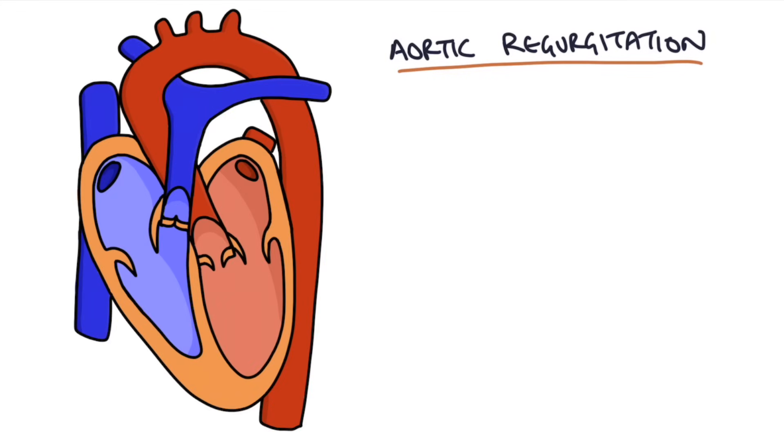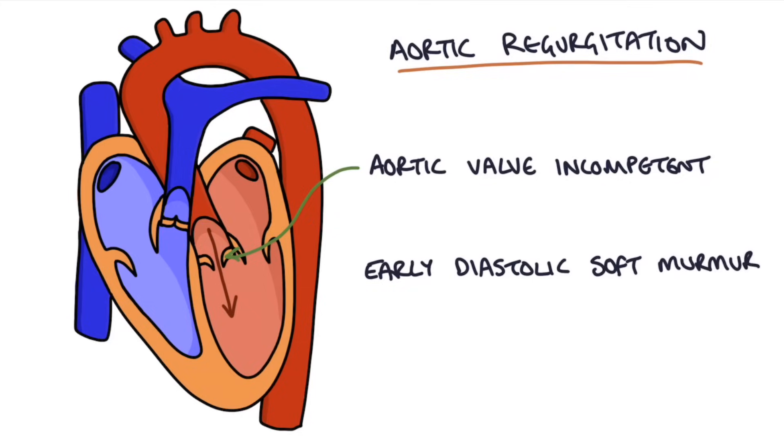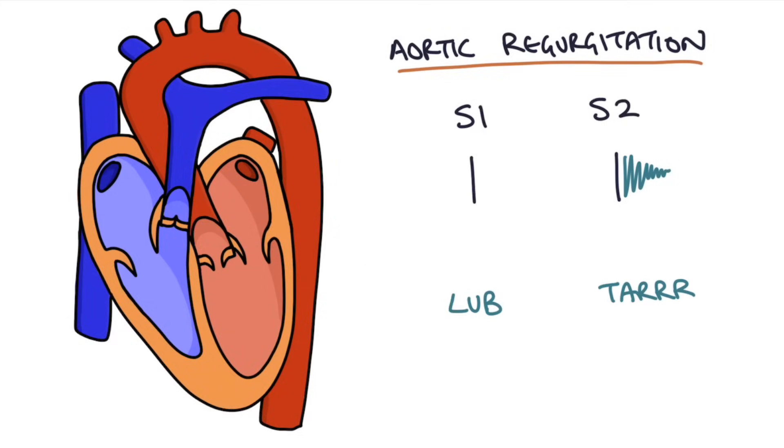The final murmur that we're going to talk about is aortic regurgitation. Aortic regurgitation is basically where the aortic valve becomes incompetent and blood is able to flow back from the aorta into the left ventricle. Because blood flow back through this valve will happen during diastole, aortic regurgitation causes an early diastolic and quite a soft murmur. So it sounds a bit like lub-tar. See if you can hear it on this example.